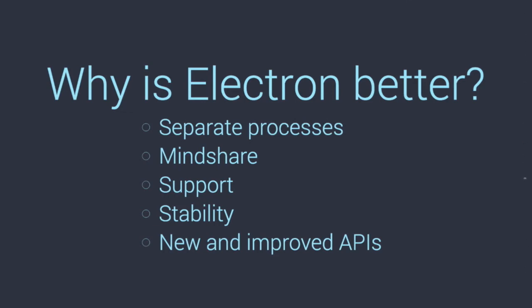If you create an issue, it'll be closed or commented on within two or three days — they're fantastic. In NWS, I've seen three-year-old legitimate bugs that haven't been fixed. I don't hold it against them because NWS is written in C++ or Objective-C++ and the people using it in JavaScript don't contribute to it. So I'm grateful for what they've done. But yeah, support is better with Electron and it's less buggy because it's being fixed more often. They also improved the APIs and added new ones.